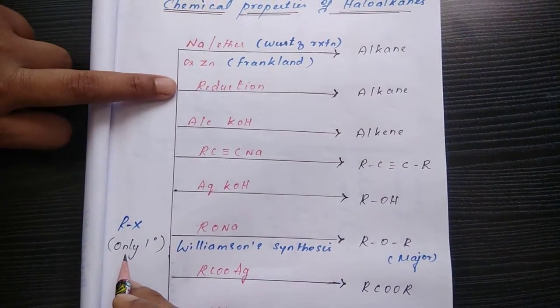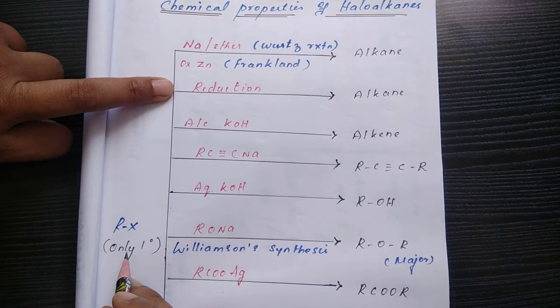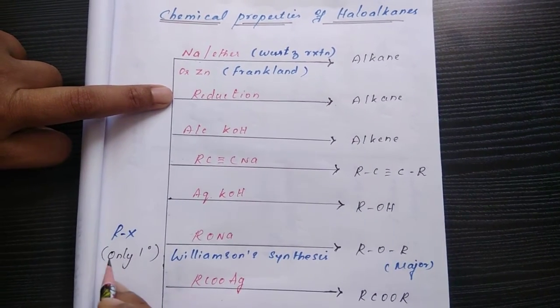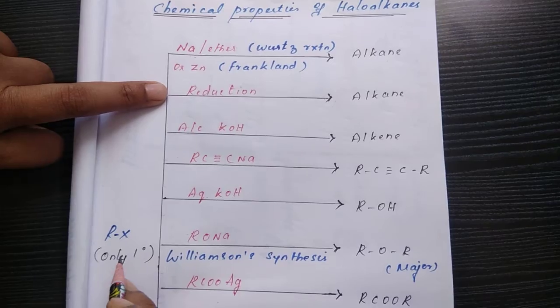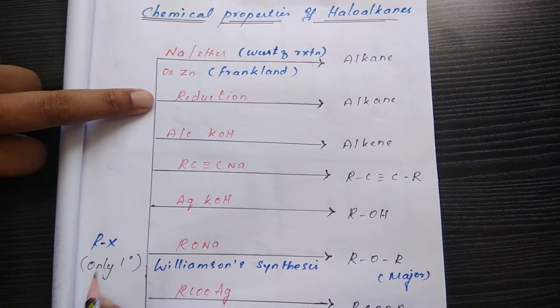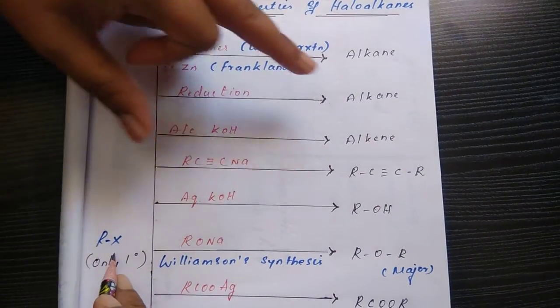Next, if you are using any reducing agents like H2 with nickel or platinum catalyst, or lithium aluminium hydride, whatever reducing agents we are using, it undergoes reduction. RX gives alkanes.